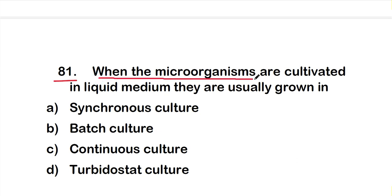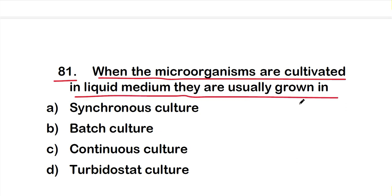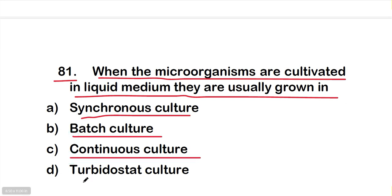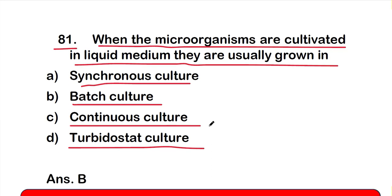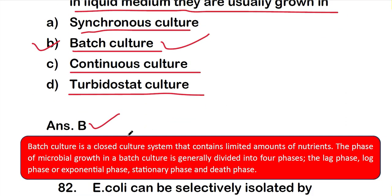Question number 81: When microorganisms are cultivated in liquid medium, they are usually grown in — option A: synchronous culture, option B: batch culture, option C: continuous culture, option D: turbidostat culture. The right answer is option B, batch culture. Batch culture is a closed culture system that contains a limited amount of nutrients.